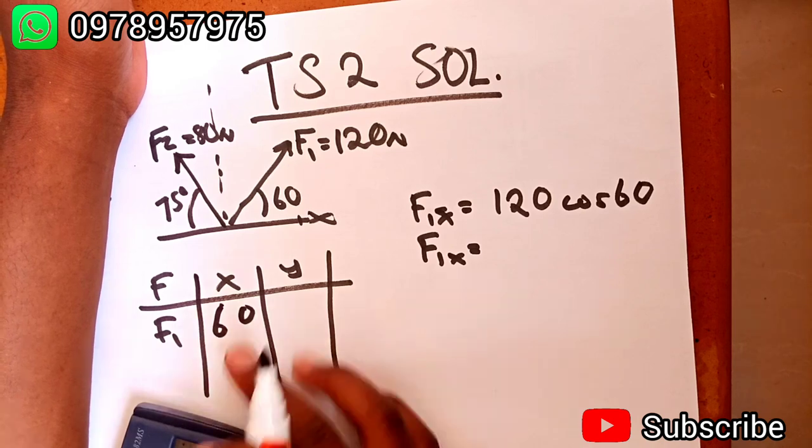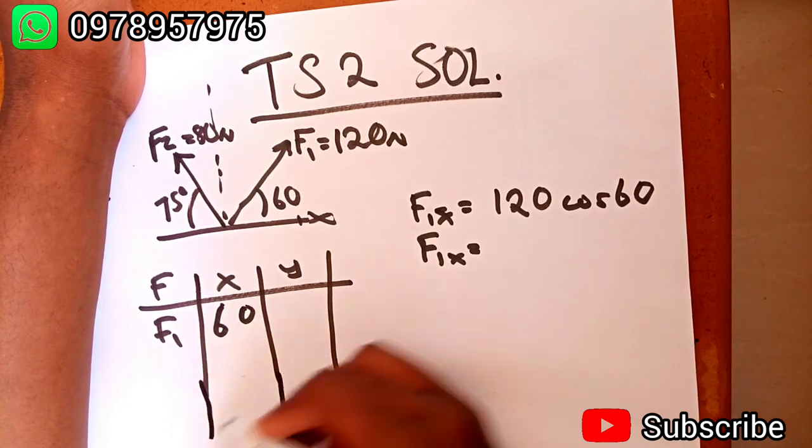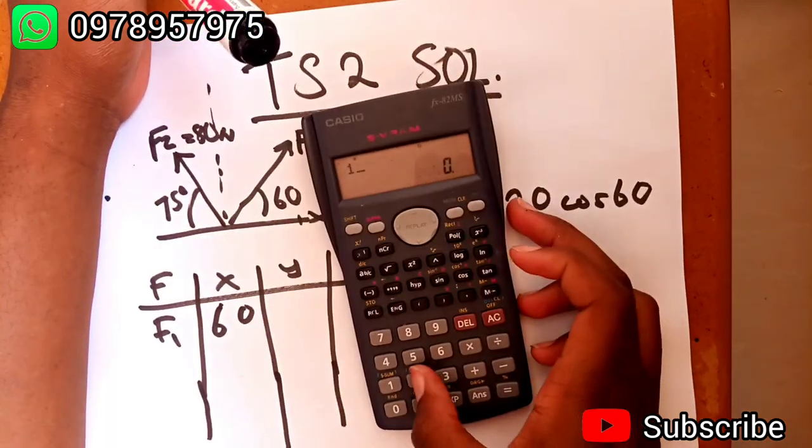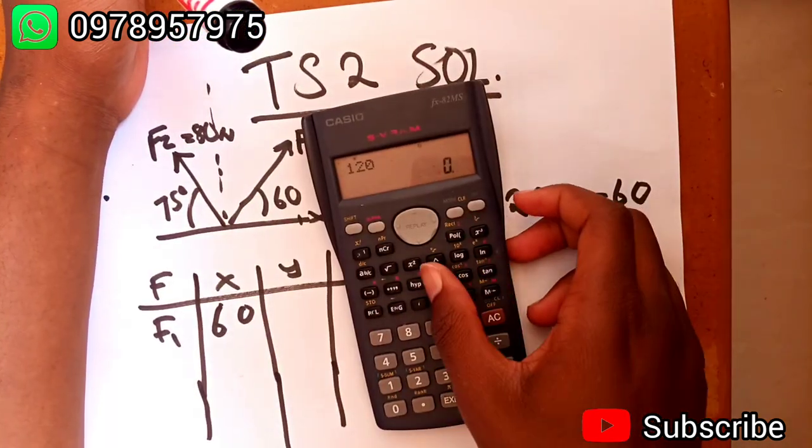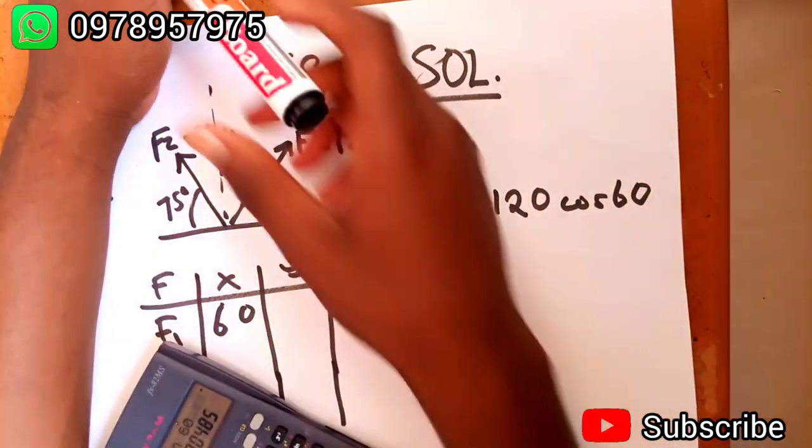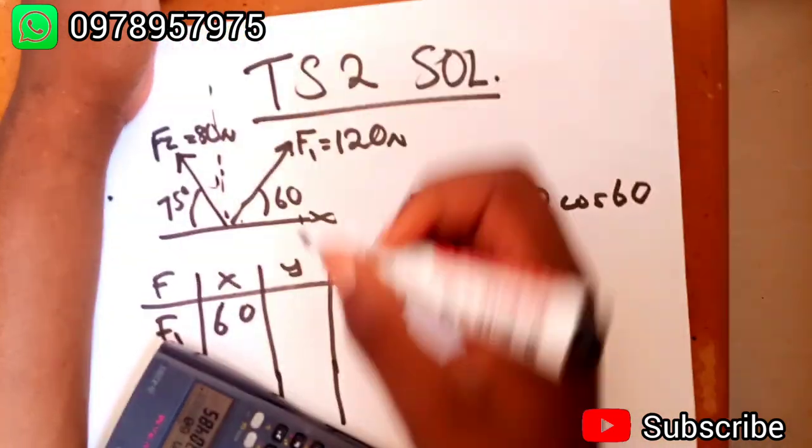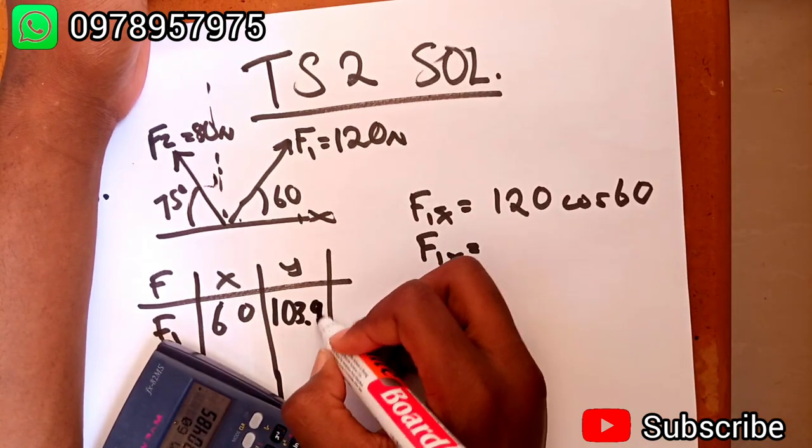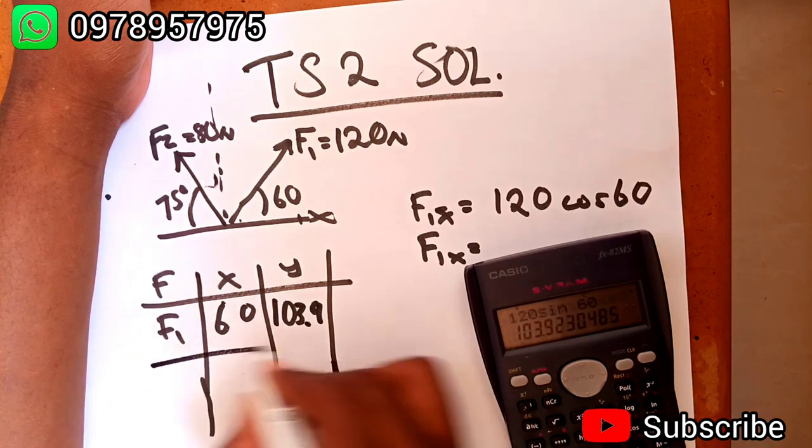In the positive x direction. Then in the y, we're going to have 120 sine 60. This one's going to give us 103.9, and then we go to F2.